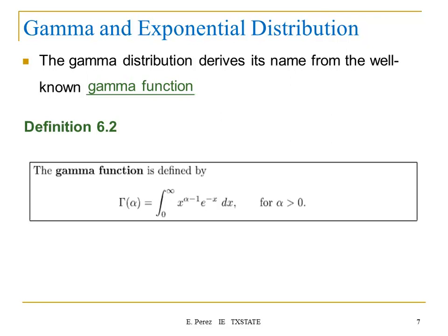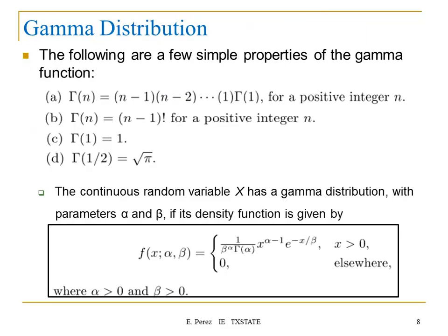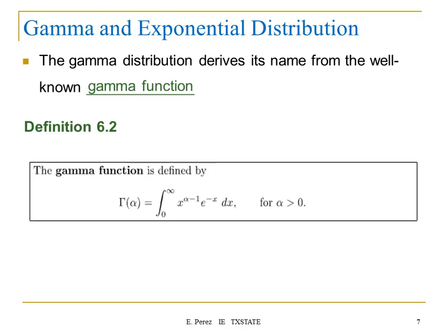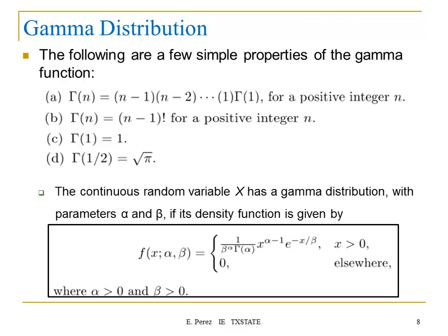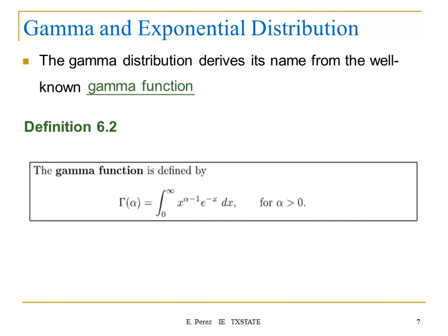We covered the uniform and the normal. I'm going to add two more that are important — the exponential will follow directly from the gamma. We can estimate the values of gamma for integer values: if you have a positive integer n, the value of gamma(n) can be estimated using (n−1) factorial. If you don't have an integer, you have to use the integral, but for integers, n−1 factorial gives you the value of the gamma function.